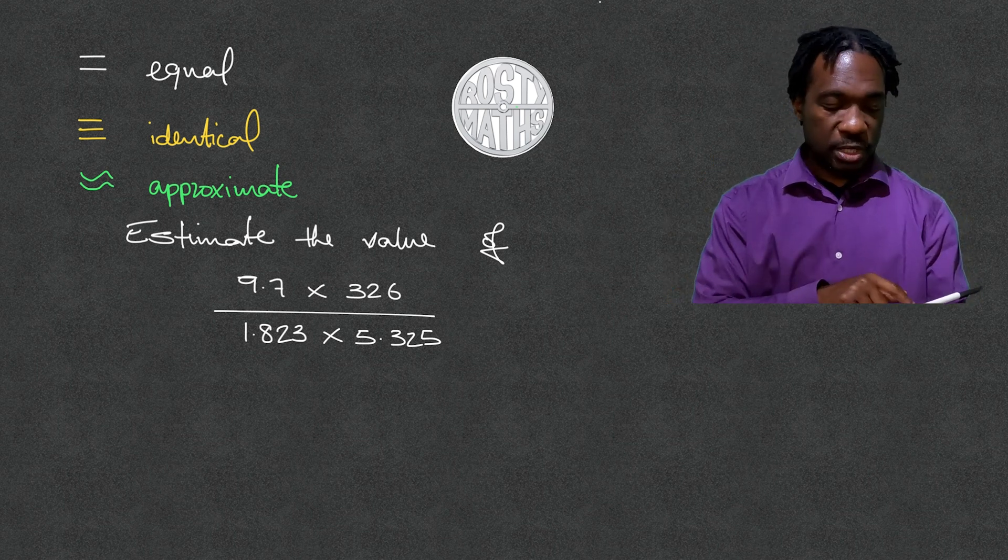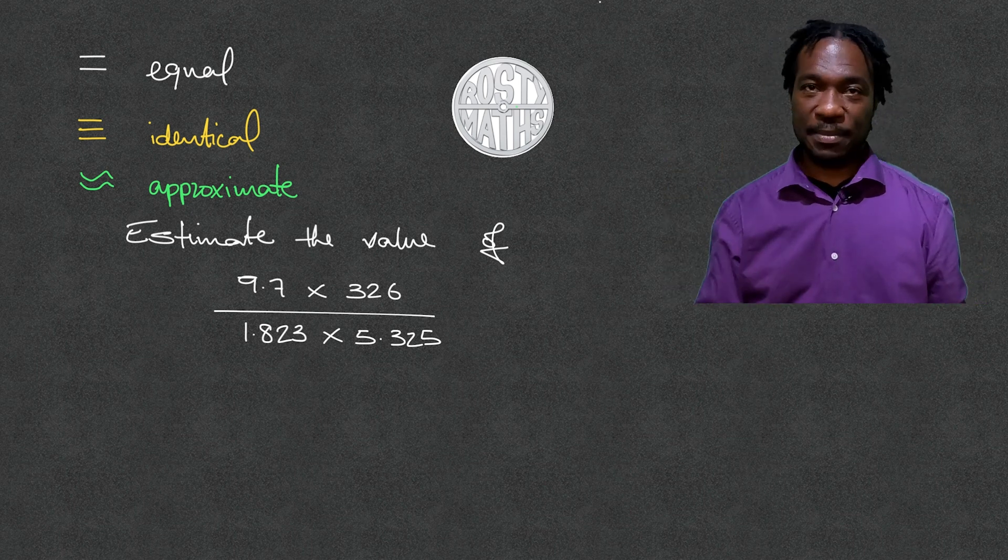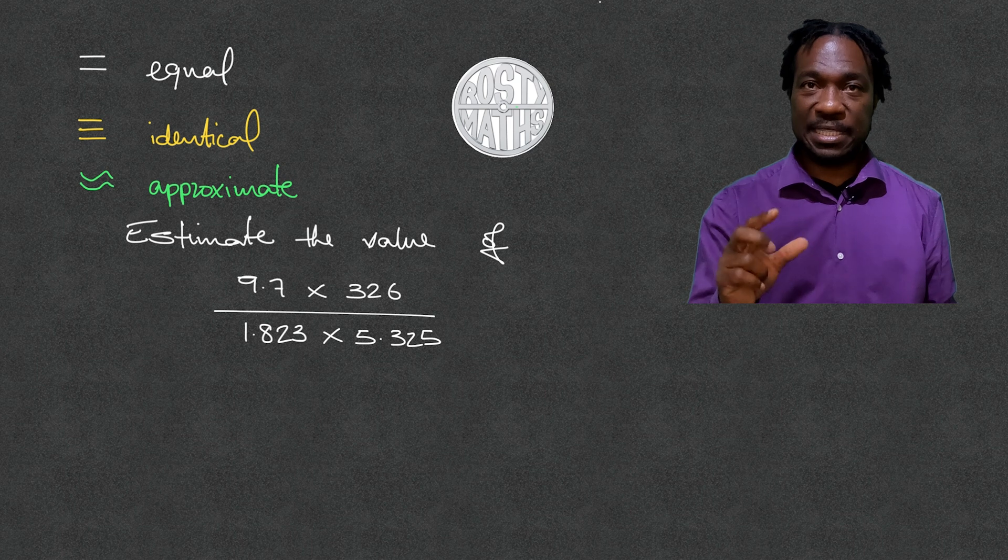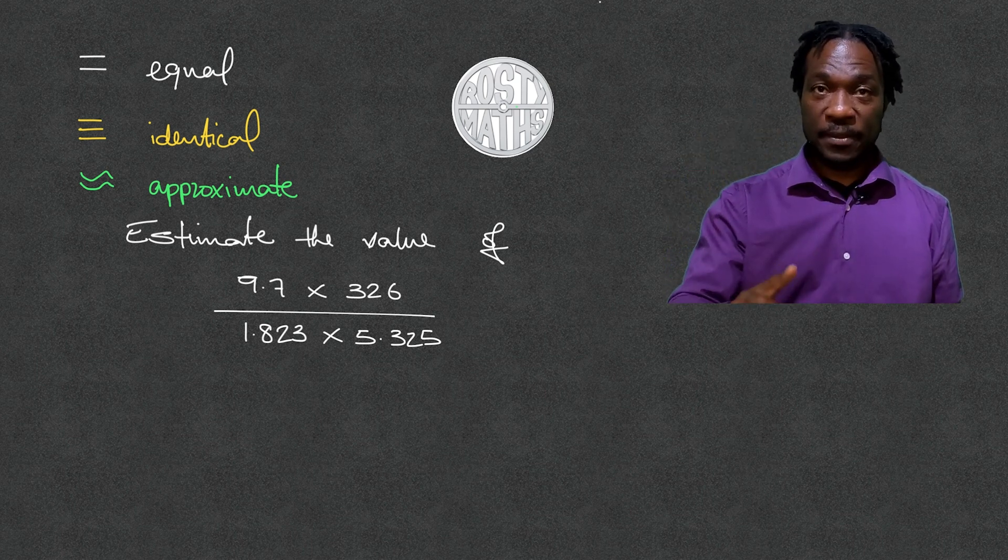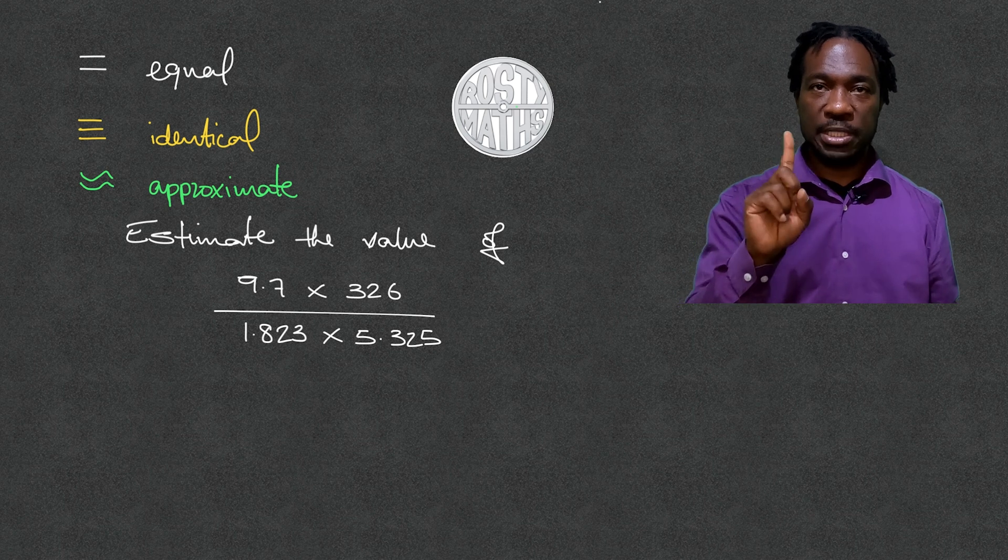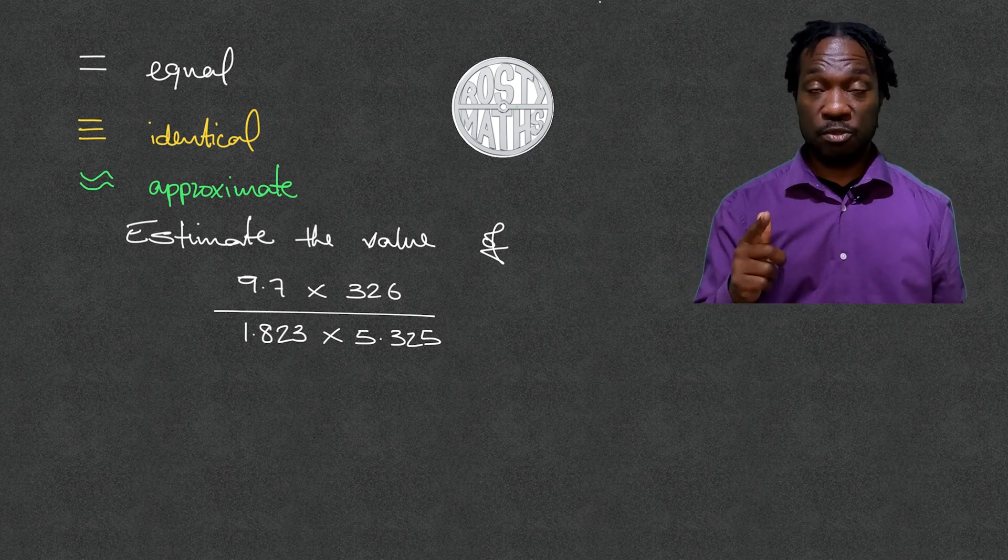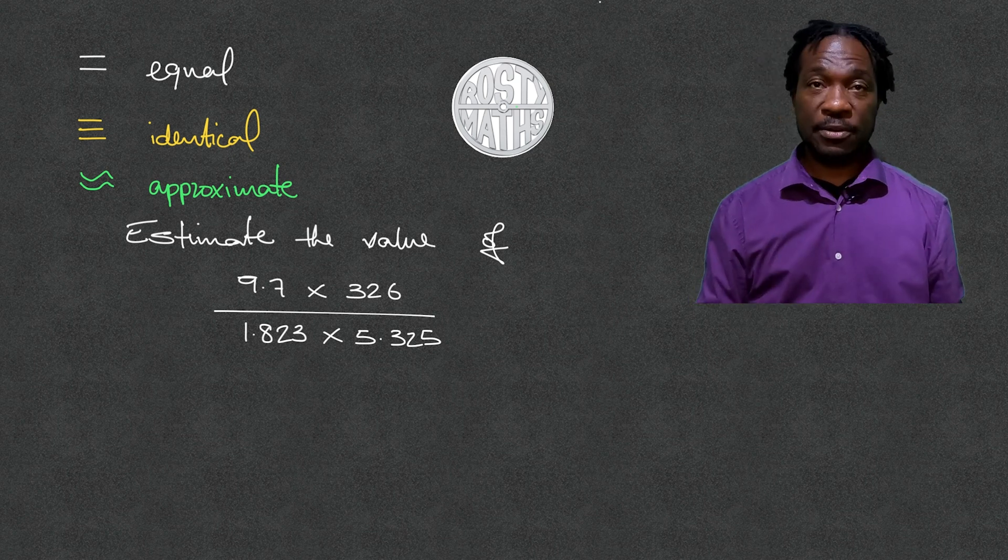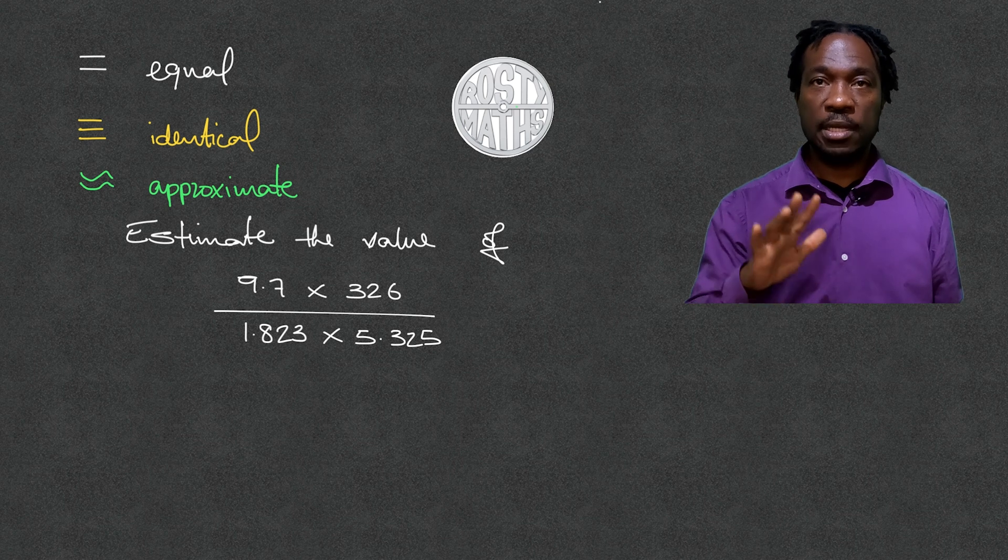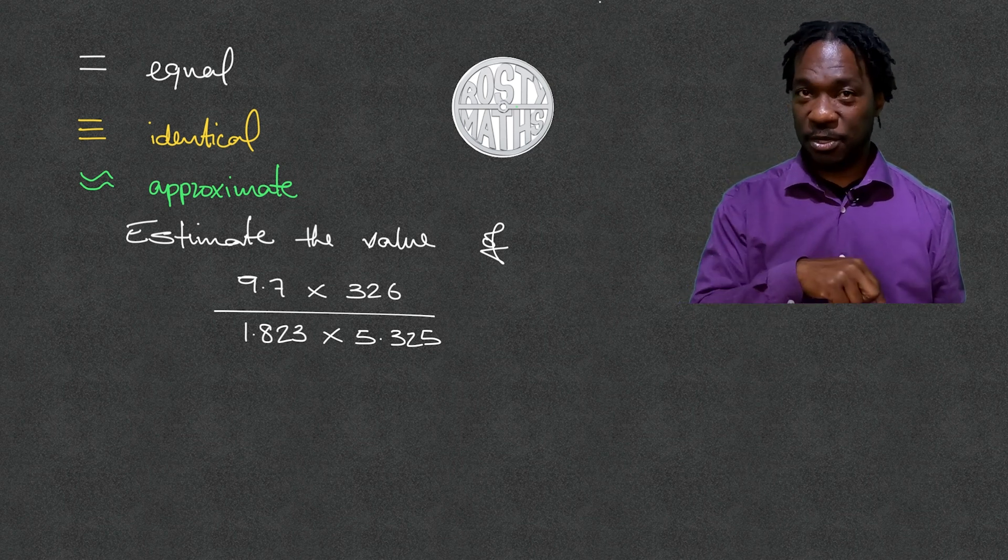So let's jump into the question. When you're doing an exam question or anything in maths, if you see the word estimate or approximate, the first thing you need to do is round all of your numbers to one significant figure. Now I hope you know your significant figures, because if you don't, click on the pop-out banner up there or follow the link in the description to watch my video on significant figures.